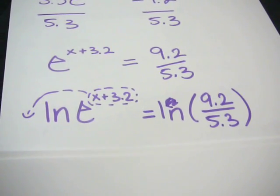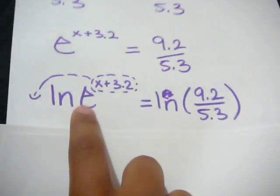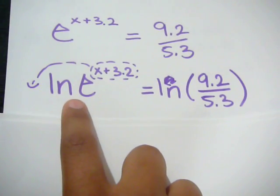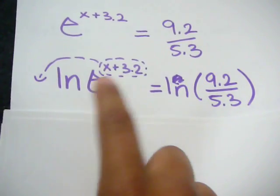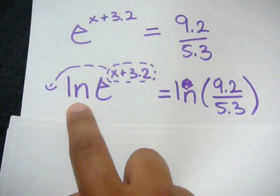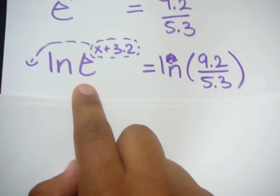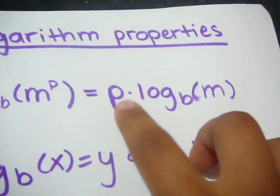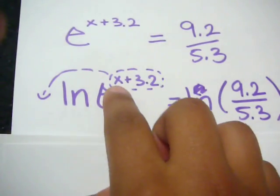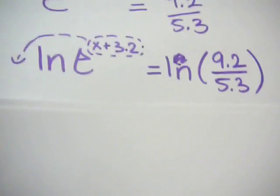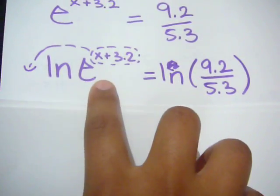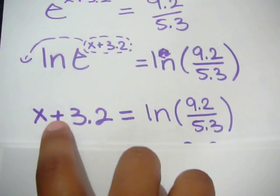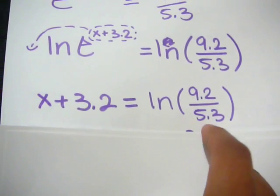The next step is to put the natural log on both sides. The natural log is going to cancel out with the e. Using the power property — putting p in front of the log — you take the exponent and put it in front of the natural log. Since you apply the natural log to this side, you also have to do it to the other side. What you're left with is x plus 3.2 is equal to the natural log of 9.2 over 5.3.